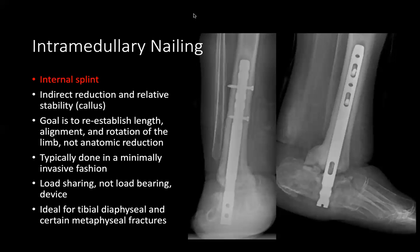IM nails are ideal for osteopenic, older patients with ankle or pilon fractures — where you're trying to reestablish a functional limb and prevent rotation, not necessarily achieving true anatomical reduction. The technique is minimally invasive — mostly poke-hole incisions besides prepping of the joint — with the biggest incision at the bottom of the heel. It's load sharing, not load bearing, transferring weight from the posterior heel up through the leg.